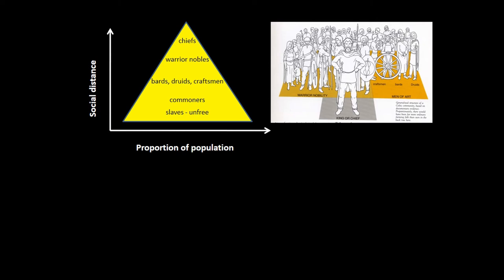Traditionally we've characterized Iron Age societies as very hierarchical. JD Hill produced a triangular model of Iron Age society where you have the bulk of the population at the bottom, a smaller group of nobles or elite, and then chiefs at the top. This model is deeply rooted in our interpretations. Clearly the landscape of East Lothian doesn't fit that kind of model at all, and it's not unusual in that respect in Iron Age Britain.